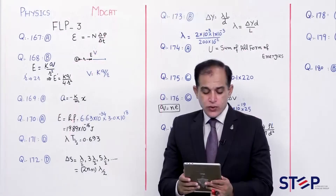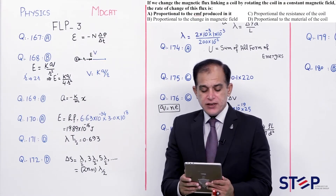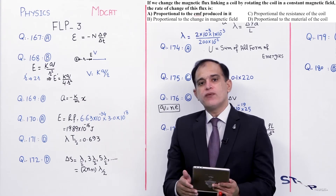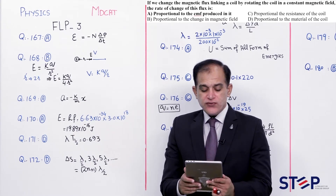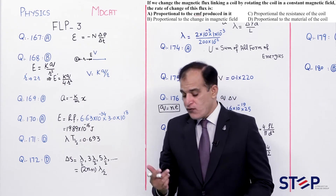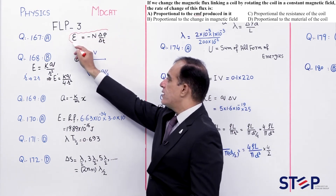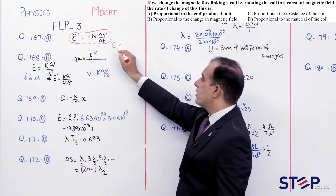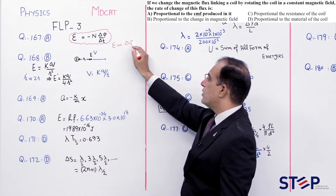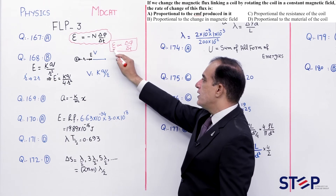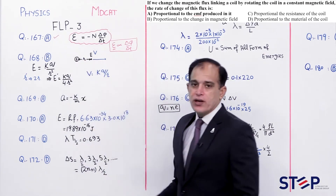Question number 167: Changing magnetic flux by rotating coil in constant magnetic field. Rate of change of flux induces EMF per Faraday's law: EMF = -N(dΦ/dt). Induced EMF is directly proportional to rate of change of flux. Correct option: Alpha.